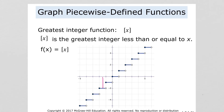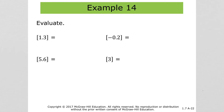The greatest integer less than or equal to negative 2.5 is negative 3. To evaluate: the greatest integer of 1.3 is 1; of 5.6 is 5; of negative 0.2 is negative 1 — not 0, we have to go lower; and the greatest integer of 3 is just 3.